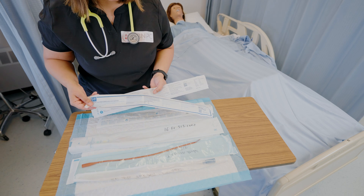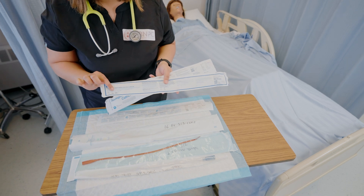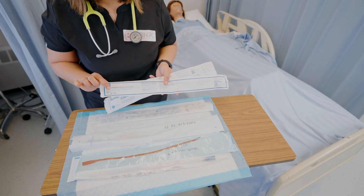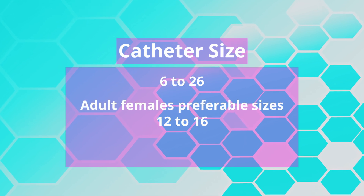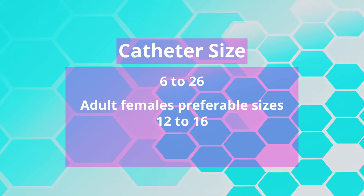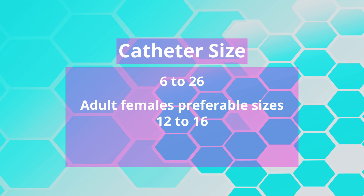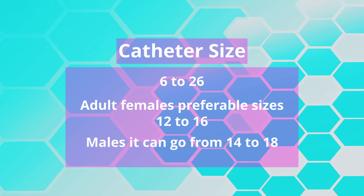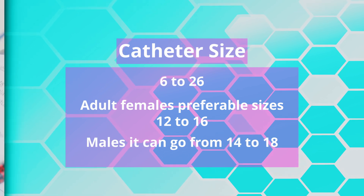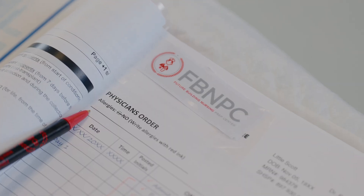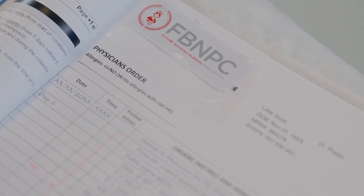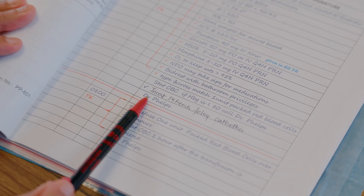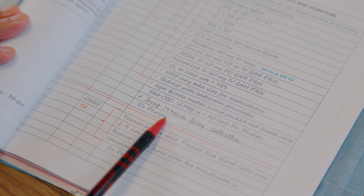The size of a Foley catheter is described using the French scale system. Catheter size can vary anywhere from 6 to 26. In adult females, preferable sizes are anywhere from 12 to 16, and in males it can go from 14 to 18. Always follow physician's orders and your nursing assessment to determine the size of the catheter required.